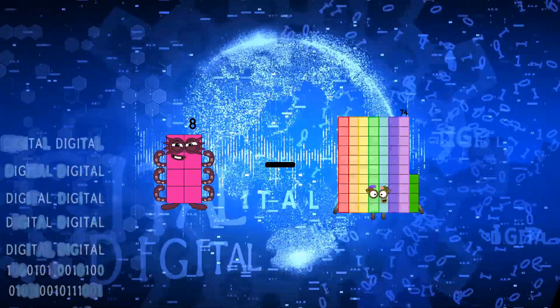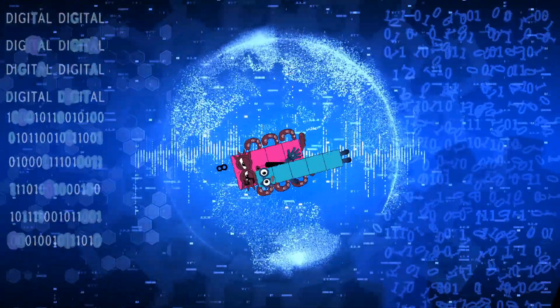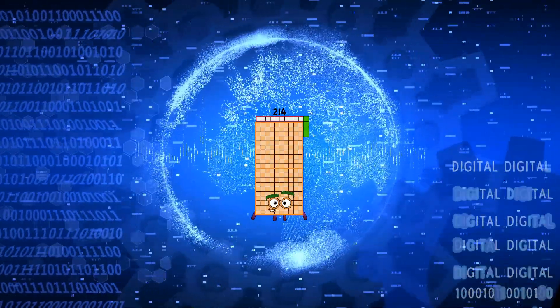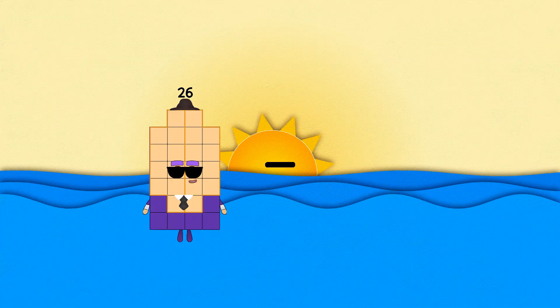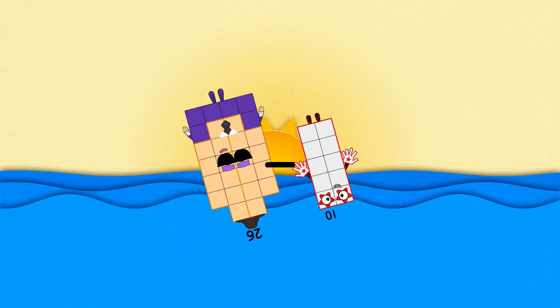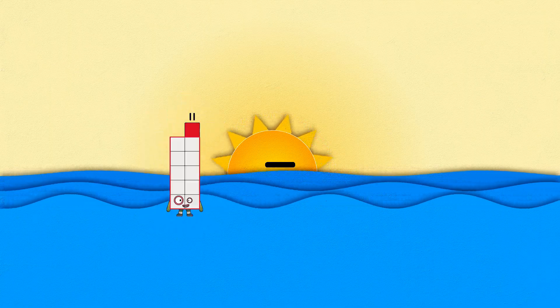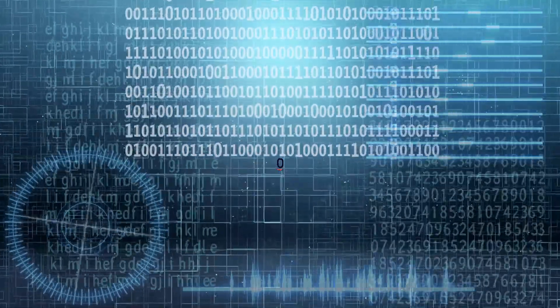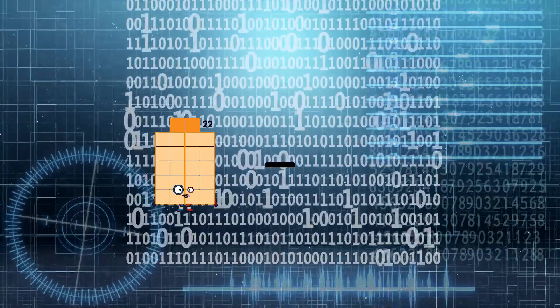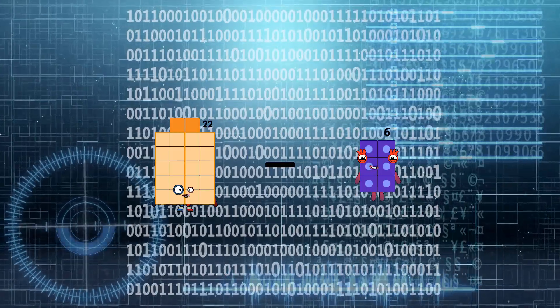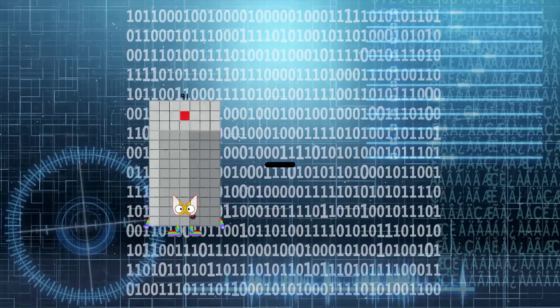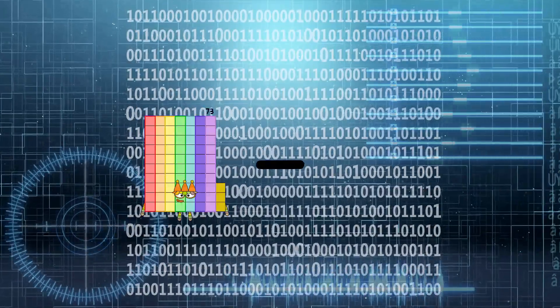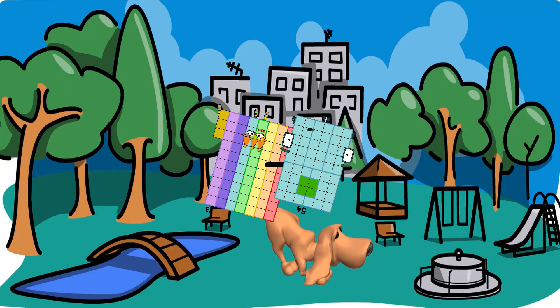8 minus 5 equals 3. 26 minus 10 equals 16. 1 minus 1 equals 0. 22 minus 6 equals 16. 73 minus 54 equals 19.